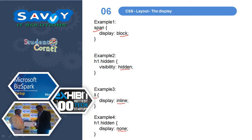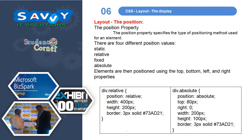Next is layout position. The position property specifies the type of positioning method used for an element. There are four different position values: static, relative, fixed and absolute. Elements are then positioned using the top, bottom, left and right properties. For example, using relative — position is relative, width is 400 and height is 200 with a 3px solid border. Similarly using absolute — position is absolute, top is 80, right is 0, width is 200, height is 100, and a border is specified. According to that, the layouts are created.